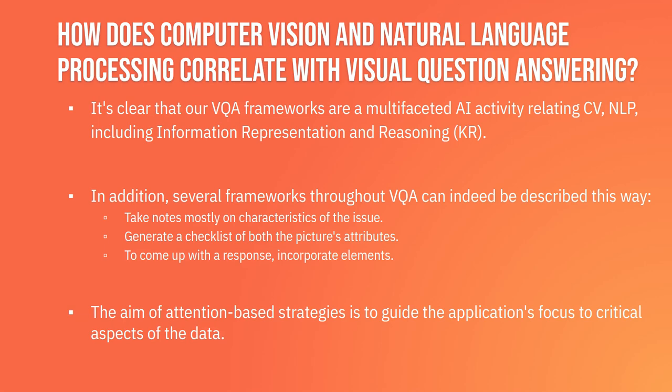The DAQUAR dataset — Dataset for Question Answering on Real World Images — is the primary dataset used. It's the first significant VQA dataset, using indoor scenes with varied lighting conditions to make it difficult to answer questions. It has achieved an accuracy of 50.2%, and this dataset is used to train these models because it's the best known dataset to fully train the model.